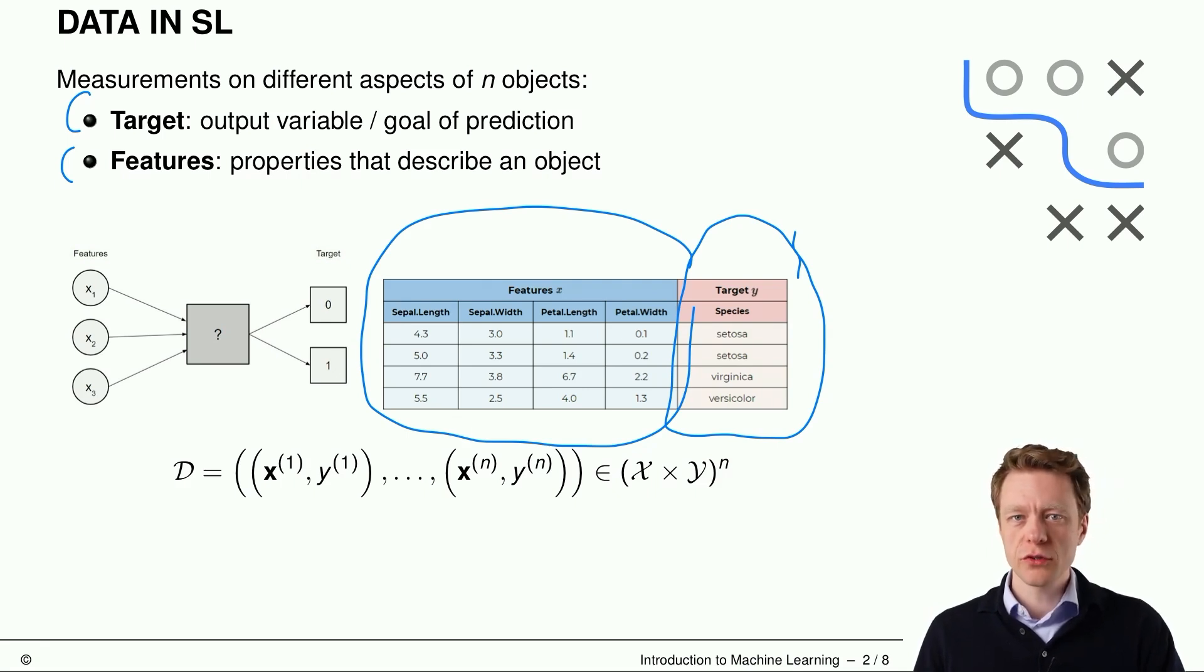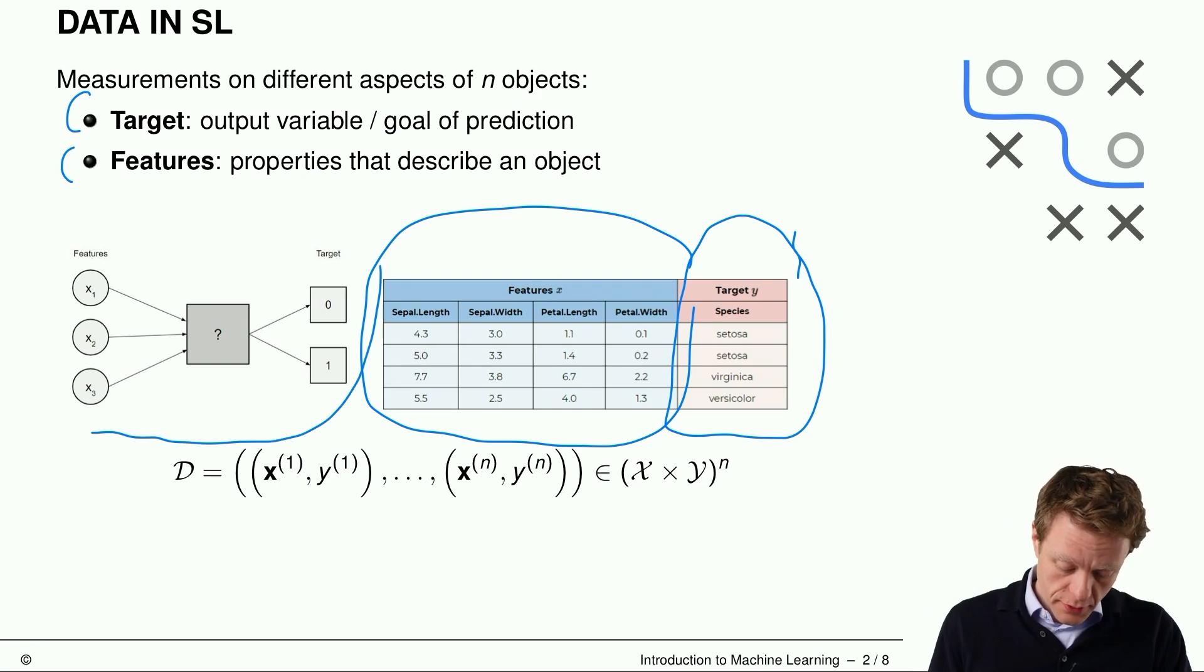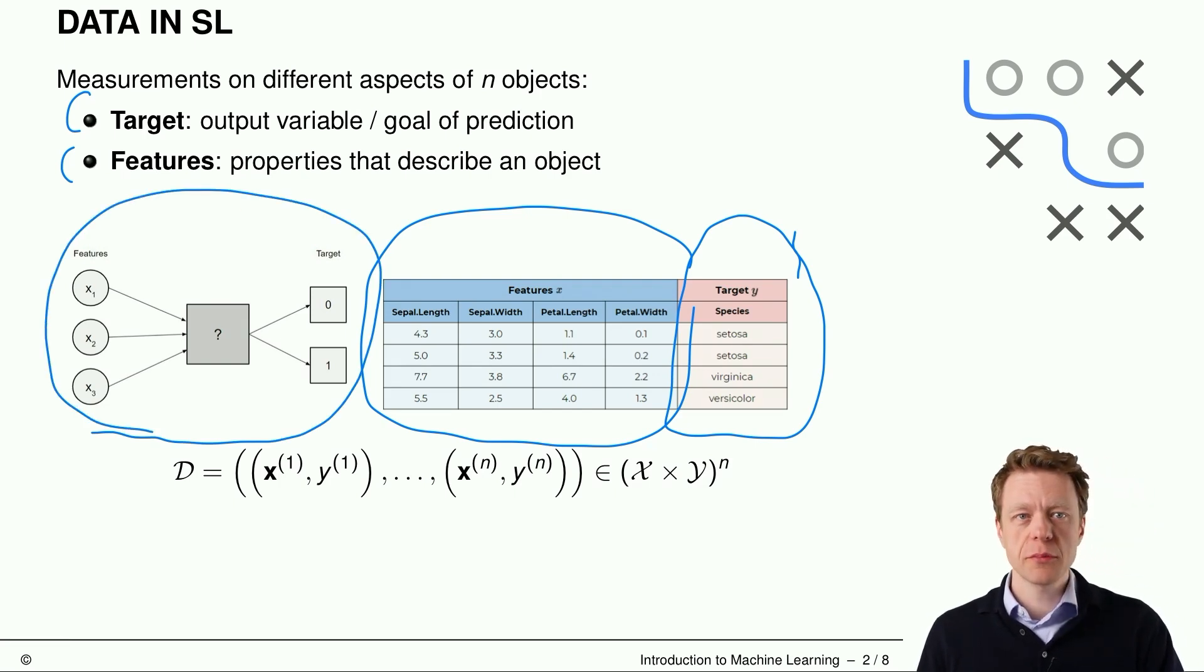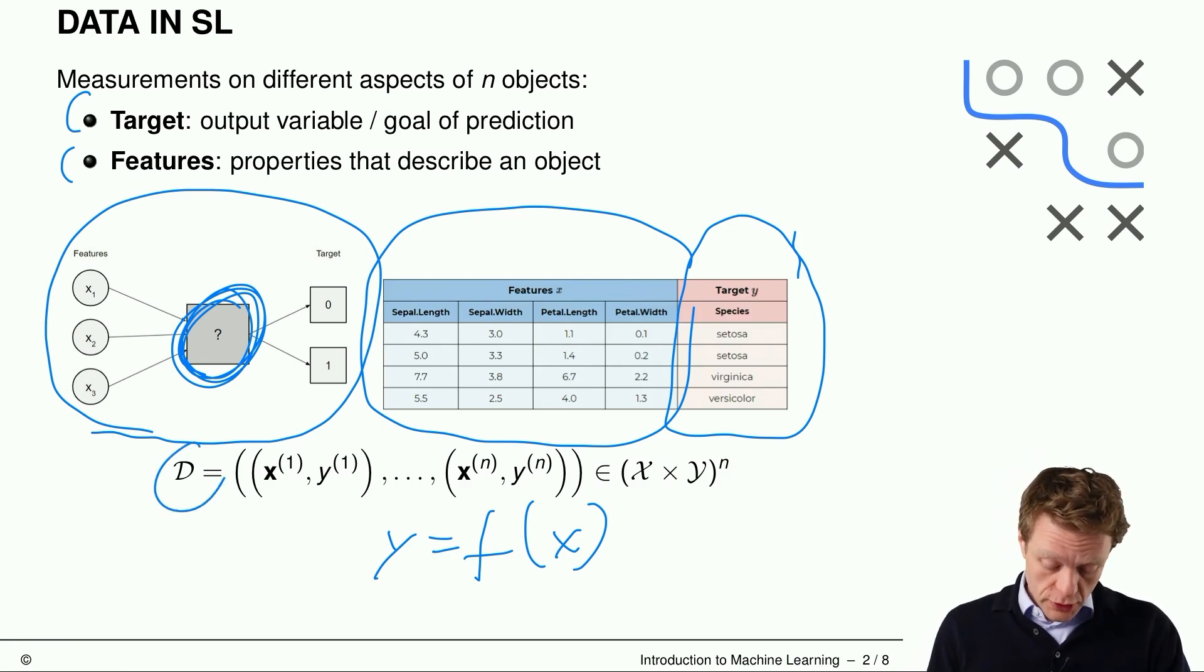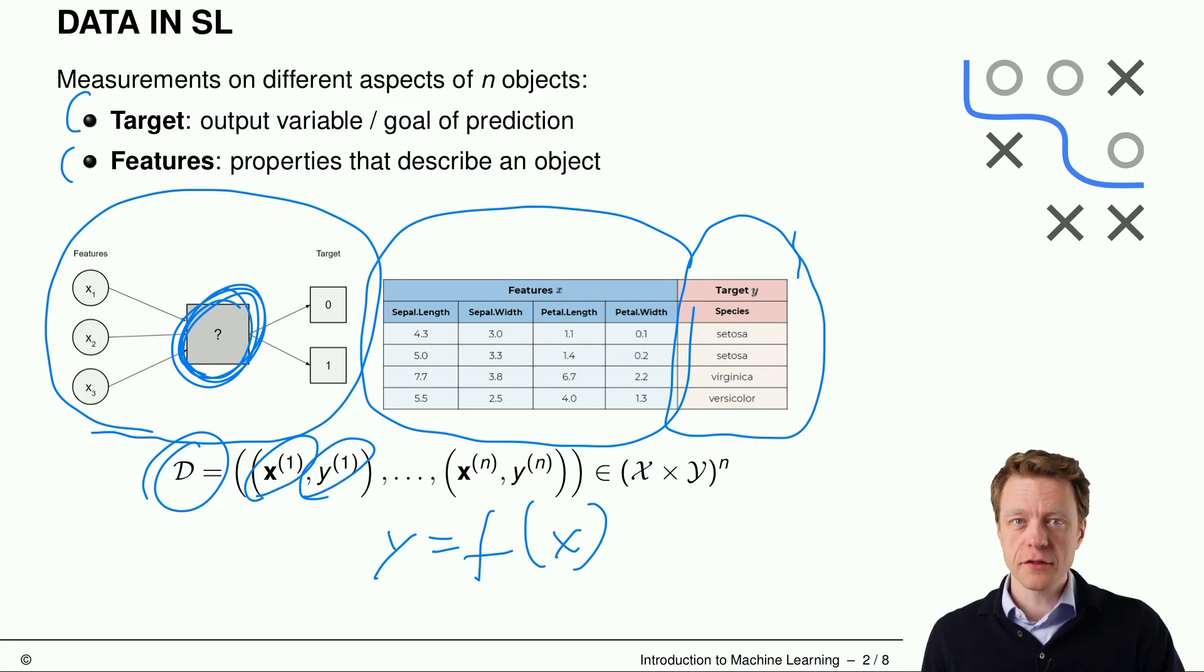On the first slide the features would just be the red, green and blue channels of all the pixels of an image. And what we try to learn is a functional relationship between y and x. So we want to learn this function f, which is in the middle between the features and the target. We denote the data set usually by D and x1 is the first feature vector and y1 is the first target. And we have in total n observations in this data set.